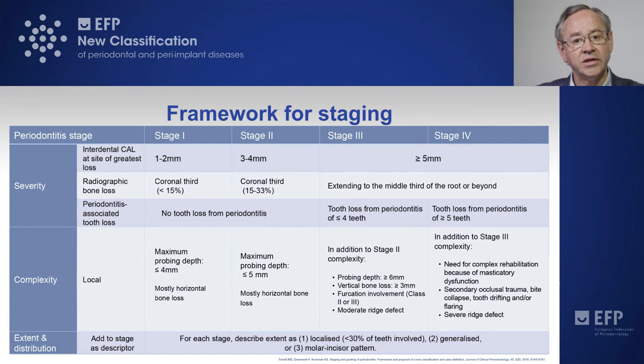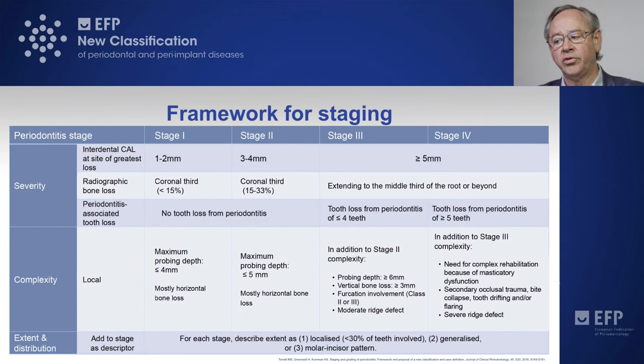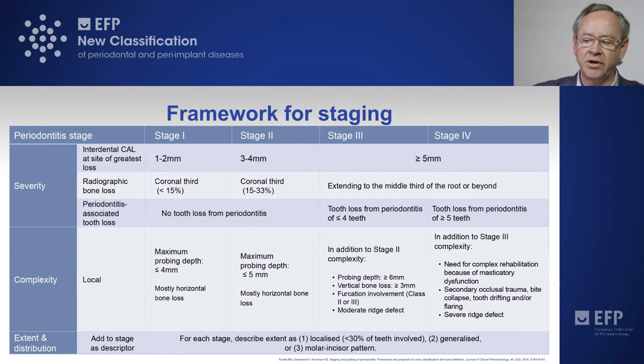Stage three is defined by these criteria. If the patient additionally requires complex rehabilitation due to masticatory dysfunction, we move them from stage three to stage four. Stage four is characterized by signs such as bite collapse, tooth drifting and/or flaring, fewer than ten occlusal pairs, and a severe ridge defect.